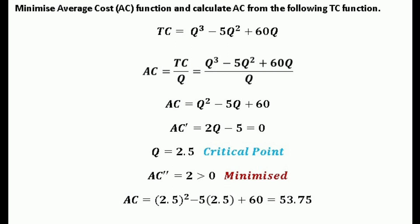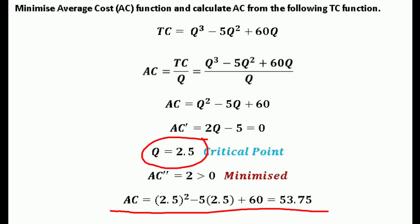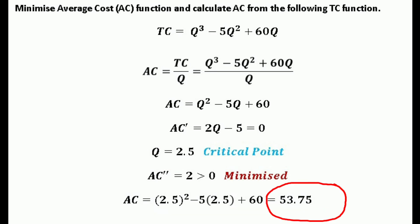To find the minimum average cost, substitute q = 2.5 into the AC function: AC = (2.5)² - 5(2.5) + 60 = 6.25 - 12.5 + 60 = 53.75. So the minimum average cost is 53.75. Since the second derivative is positive over the whole domain, the function is strictly convex and the minimum is the global minimum.